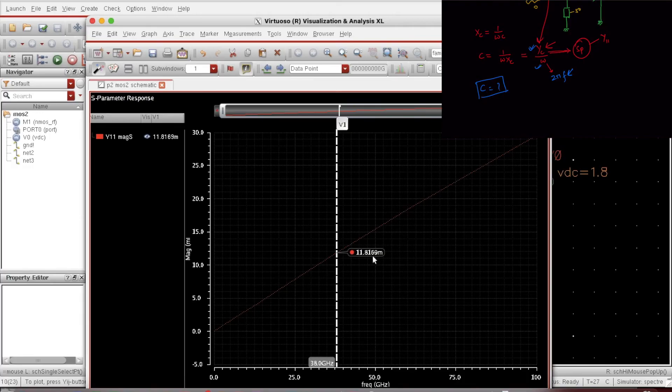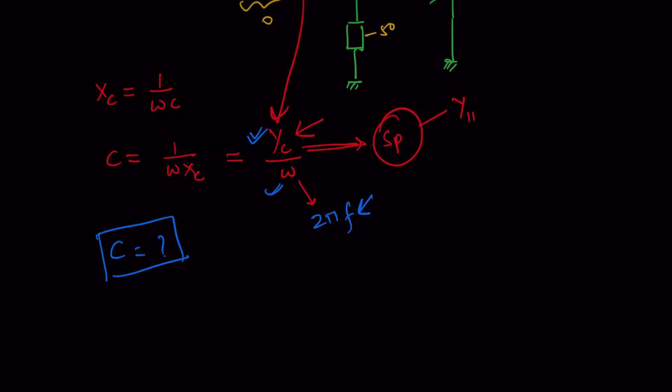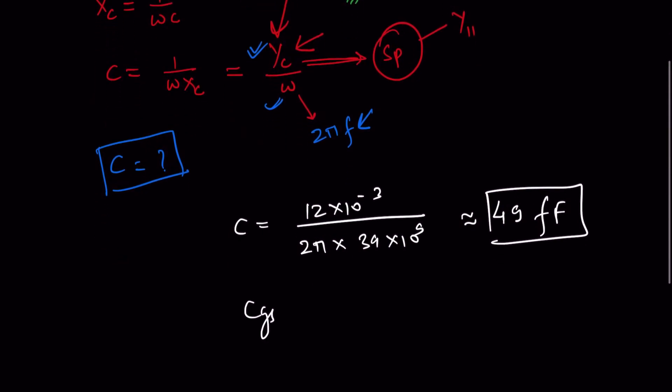So now YC would be 12 times 10 to the power minus 3, and this is 2 pi times 39 times 10 to the power 9. So it will come around 49 femtofarads. So this will be the CGS value, 49 femtofarads. That's how we calculate the CGS.